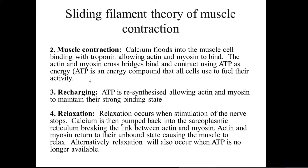The third step is recharging. ATP is resynthesized, allowing actin and myosin to maintain their strong binding. When ATP is broken down into ADP (adenosine diphosphate) plus one inorganic phosphate, the muscular cell consumes this ATP for contraction. When ATP is no longer available, the muscles enter a relaxed state.